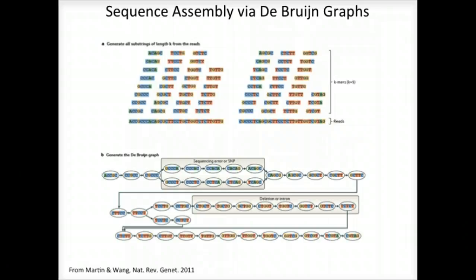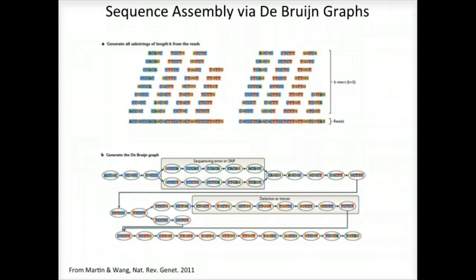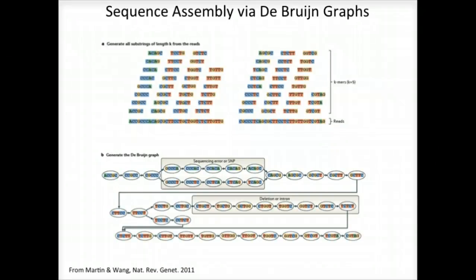A de Bruijn graph is constructed by assigning each unique kmer as a node in the graph, and connecting immediately overlapping kmers by an edge. This is a very effective and compact way of representing the sequence data within the reads. For example, hundreds of millions of reads can be sequenced, and the identical sequence regions within reads become compressed into individual nodes within the graph.